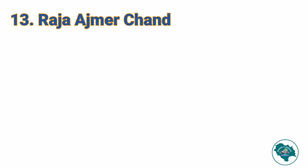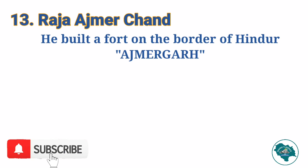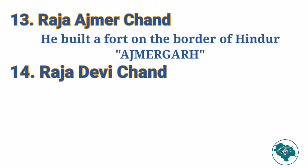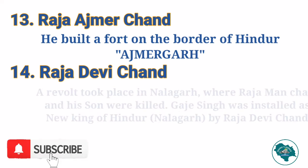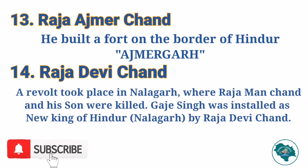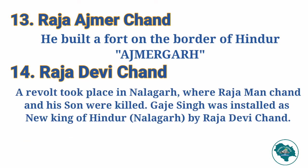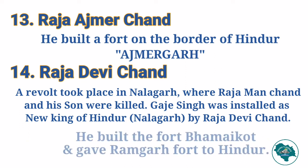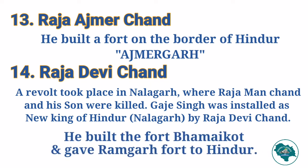After him came Raja Ajmerchand, famous for building a fort on the border of Hindur called Ajmergad. After him came Raja Devichand. During his time, a revolt took place in the neighbouring state of Nalagad where Raja Manchand and his son were killed. Gajay Singh was installed as the new king of Hindur by Raja Devichand. He built the fort Bhamayakot and gave Ramgad fort to Hindur.